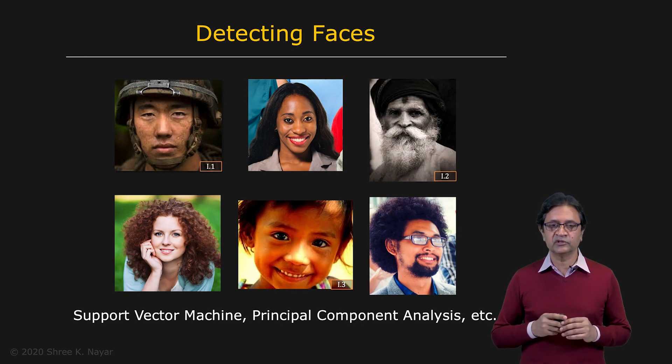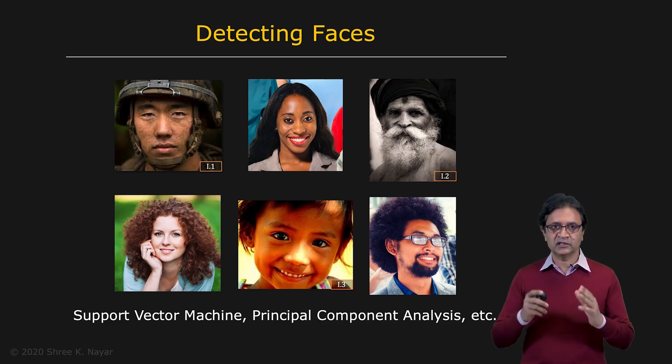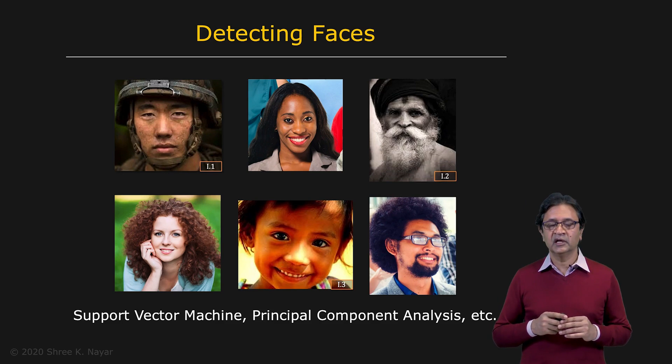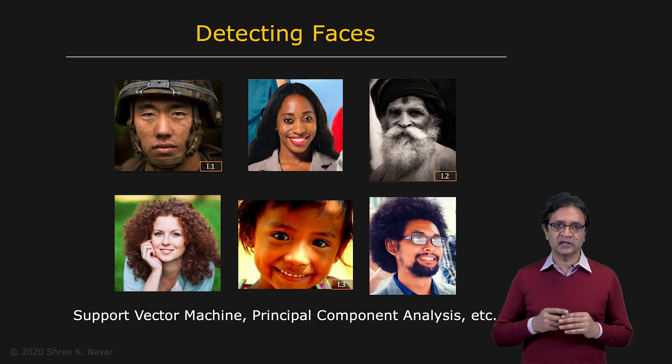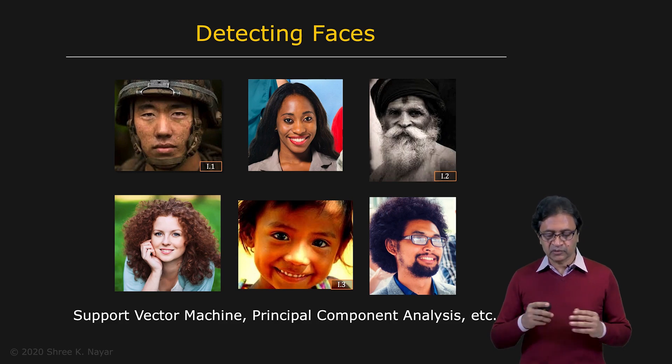We've seen a few different approaches. One is the use of hard features followed by support vector machines for classifying images as being face images or non-face images. And we also talked about the use of principle component analysis to compute eigenfaces, which can be used to both detect faces and recognize faces. Here's a problem for which we know how to develop fairly robust systems.